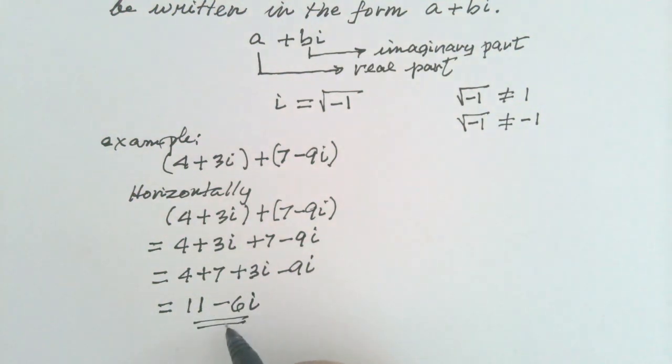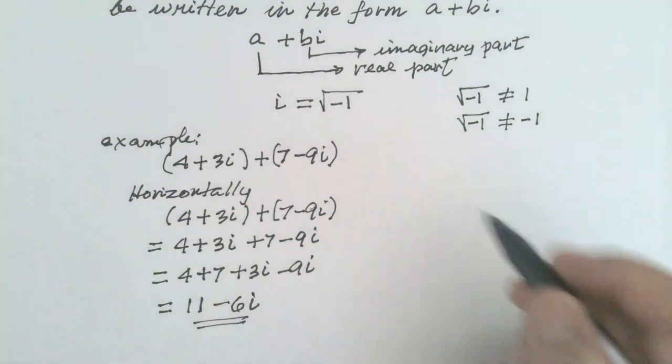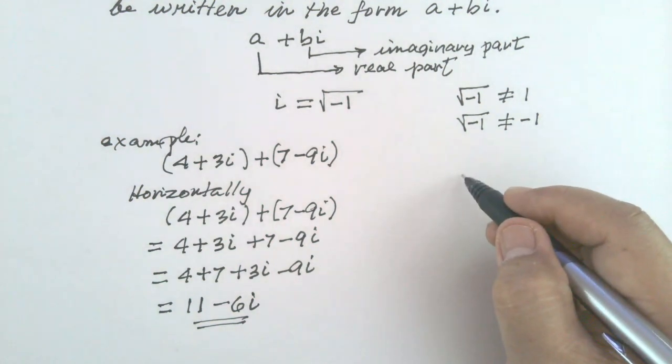So, the answer is 11 minus 6I. Now, this can also be done vertically.